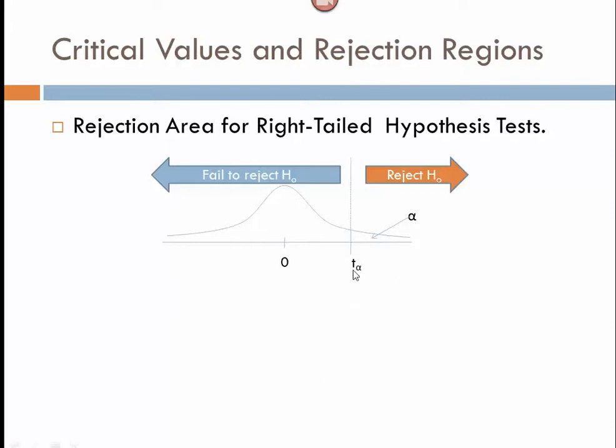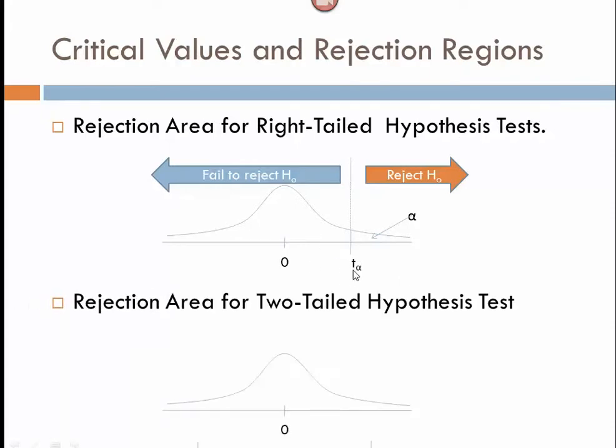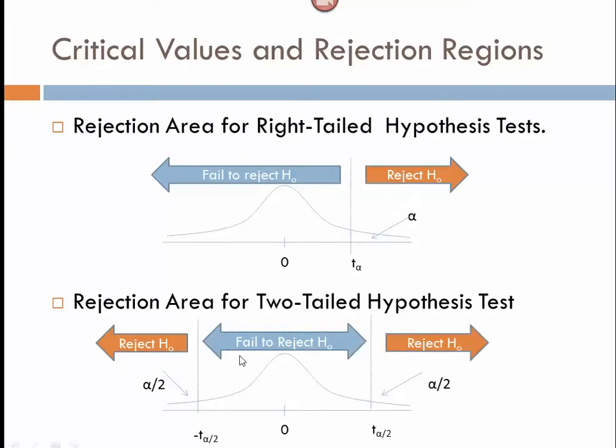And then for a two-tailed test, we're actually going to have two critical values. We're splitting up our tail area in two, so that's why we have this alpha over 2, alpha over 2. We have two T values as boundaries representing our rejection regions. And then our failing to reject region is in the middle.